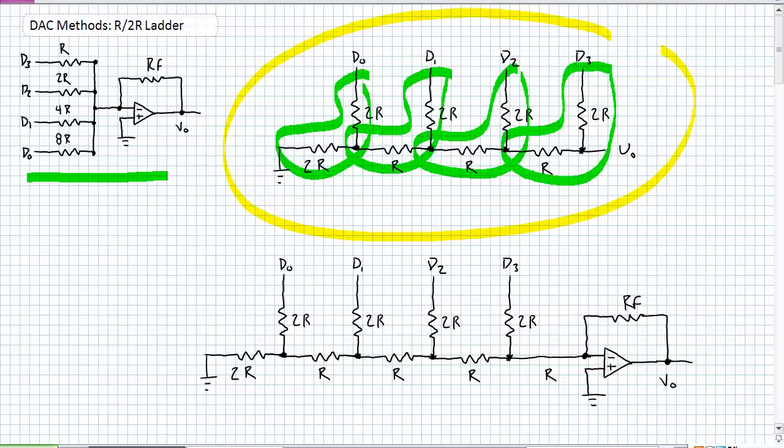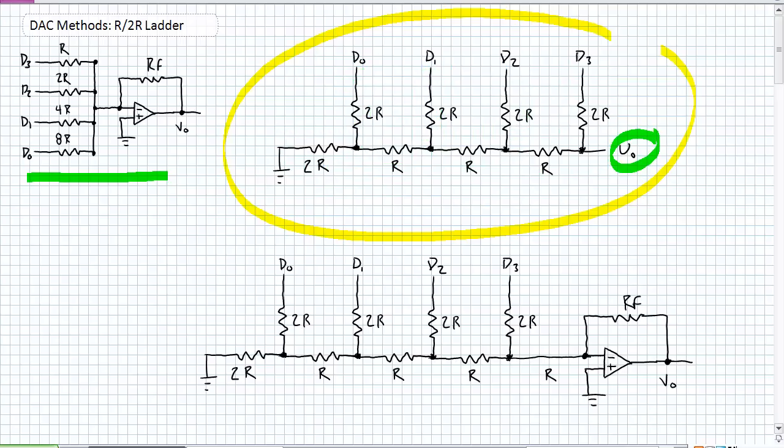The binary weighted method, basically how we did this was the lowest significant bit contributed less, the most significant bit contributed more. Exact same thing for the resistive ladder network here. How we do that though is kind of different. It's through this voltage division. Notice my output voltage is right there. And for D0 to contribute anything, it's got to go through one stage, two stage, three stages, four stages to get to that output. And each time it's successively being divided. Notice however, D3 only has to go through one stage of voltage division.